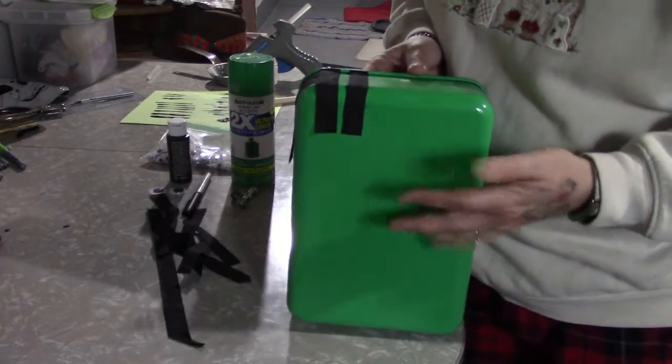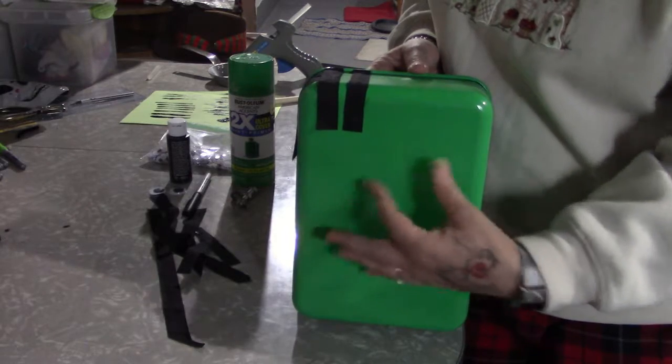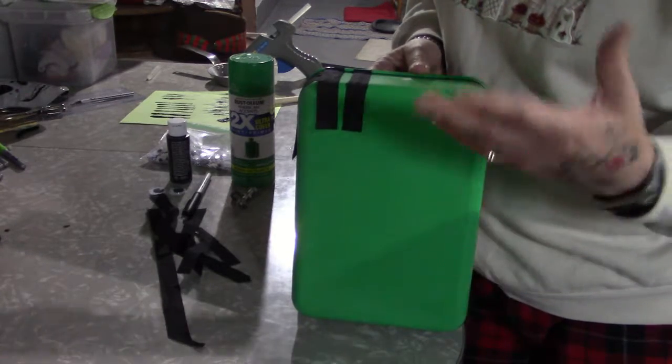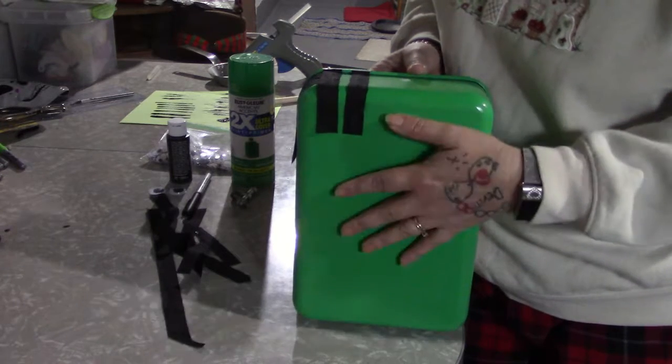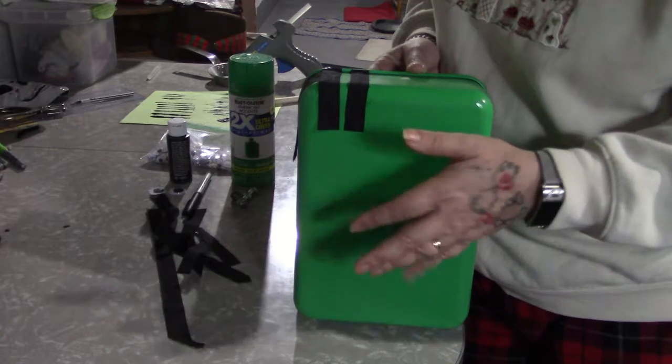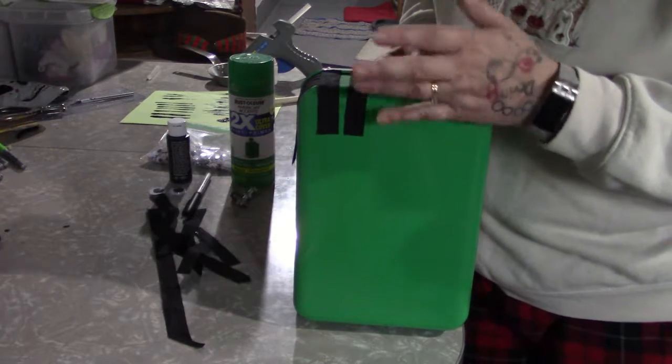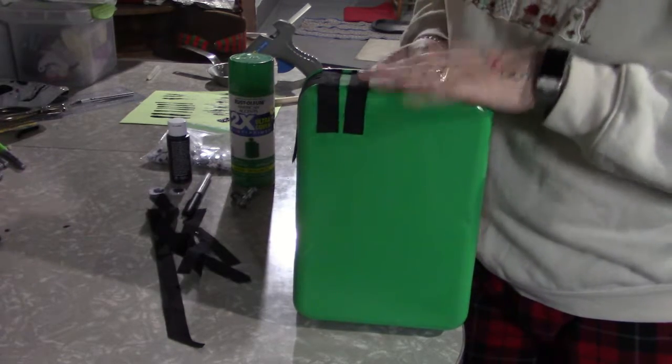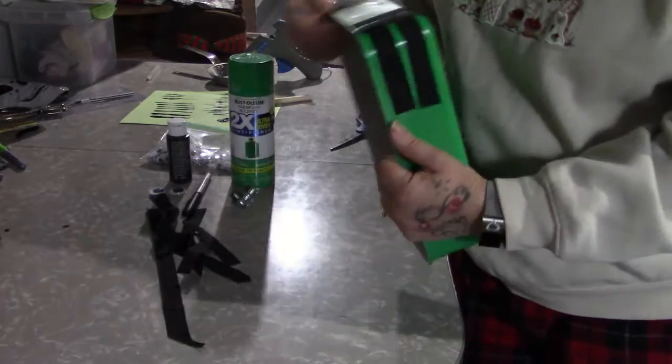Basically all you have to do is put his hair on, put some eyeballs on, a mouth and some bolts. This is a really simple project so you can do this with the kids. The only thing I suggest is be careful around the hot glue gun because we don't want anybody to get burnt.